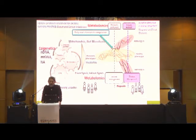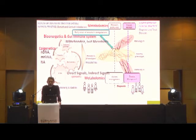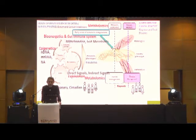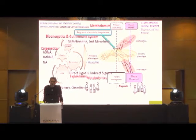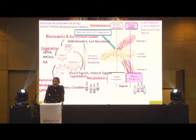If you want to manipulate the mitochondria and gut microbiota, you use the sciences of epigenetics, bioenergetics, and the gut immune system. If you want to manipulate the environment, you use the science of exposomics. And if you want to manipulate the circadian rhythm and evolutionary time, you use the sciences of evolutionary medicine and chronobiology. So these are the seven pillars of health optimization medicine: metabolomics, epigenetics, bioenergetics, gut immune system, exposomics, evolutionary medicine, and chronobiology. This is what I call Medicine 2.0. We still don't teach this in medical schools.